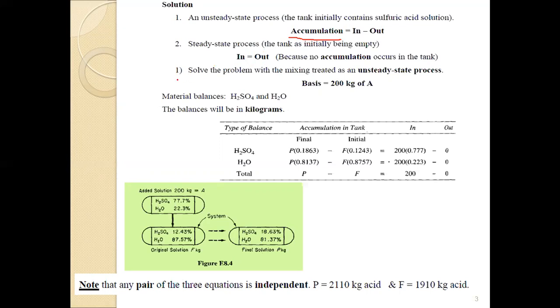So for the first assumption, unsteady state process, the basis will be 200 kg of A, which is given in the problem statement. The final solution will be produced from addition of new solution with high concentration sulfuric acid to the weak or old solution.